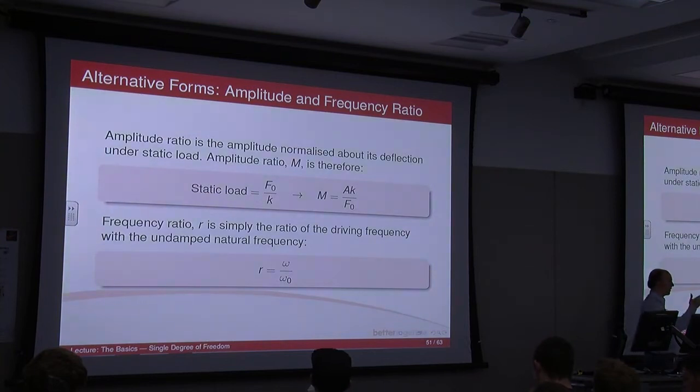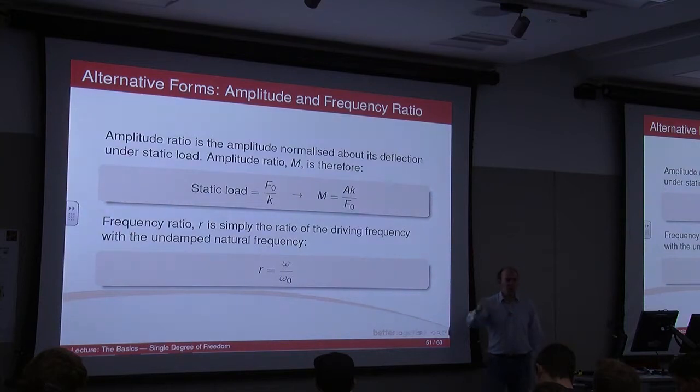Obviously, you multiply both sides by k. You end up with k times a, which is the displacement, equals the force. kx is the force, the force in the spring. And so you end up with this equation. That's the static load. If you've got another amplitude, that's a certain way away, because you're looking at different frequencies. To get the amplitude ratio, you divide it by the static deflection, the static load. So you end up with a times k, divided by f naught.